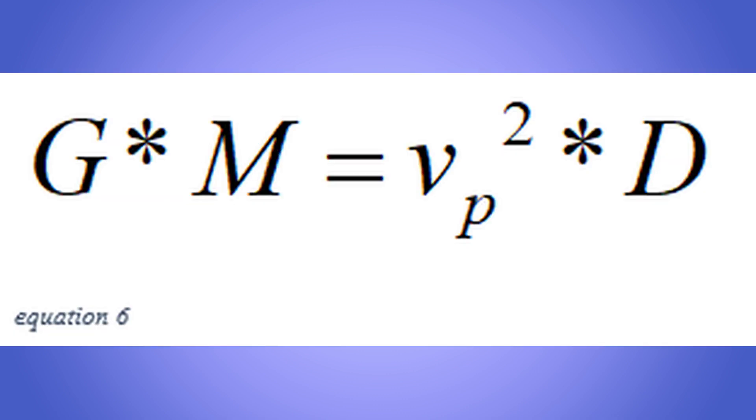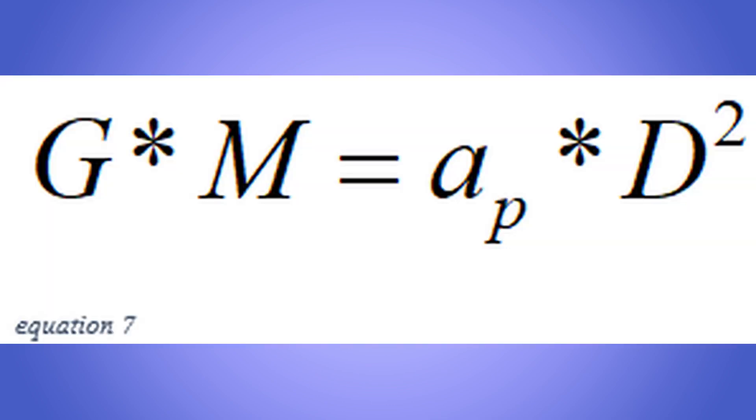V being the orbiting velocity of the planet, and d being the radial distance between the planet and the central mass, the sun. This equation is the same as equation 7, a being the acceleration at the surface area, and d being the radial distance between the planet and the central mass, the sun.